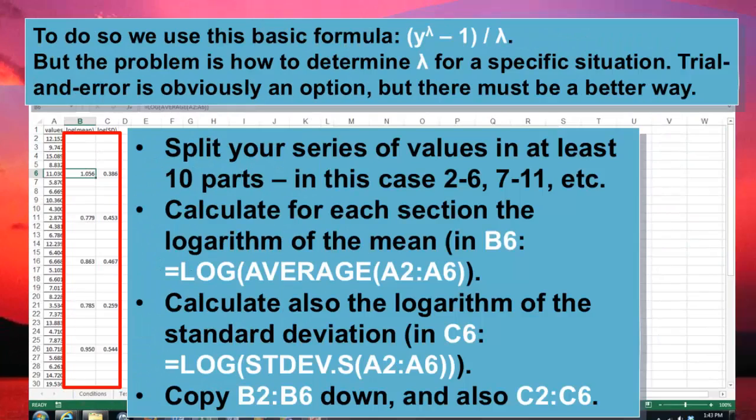Now that we know that, we are going to do that to a more complicated situation. How do you find out what lambda should be? Trial and error is usually not the best option. What you do is, you split your series of values in at least 10 parts. So 2 to 6 in this case, 7 to 11, etc. We calculate for each section the logarithm of the mean. So in B6 it's the log function of the average of A2 through A6. And in C6 we did the standard deviation. And then we copy that formula down for all the other ones.